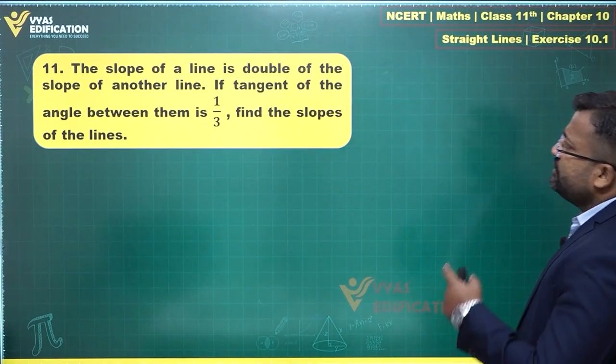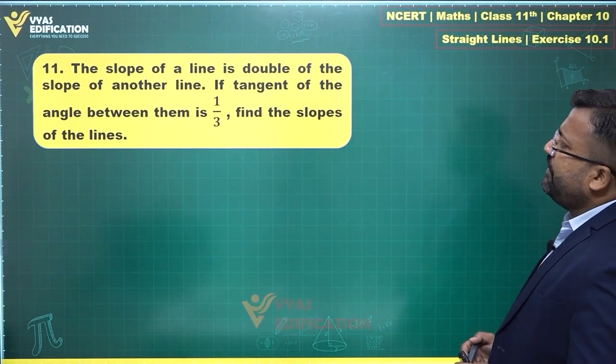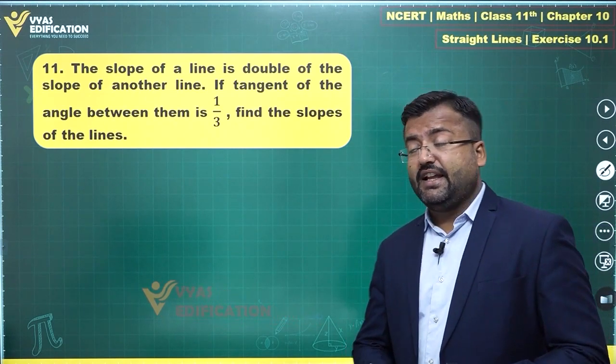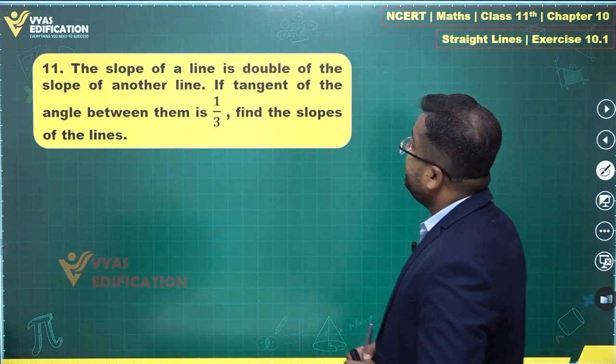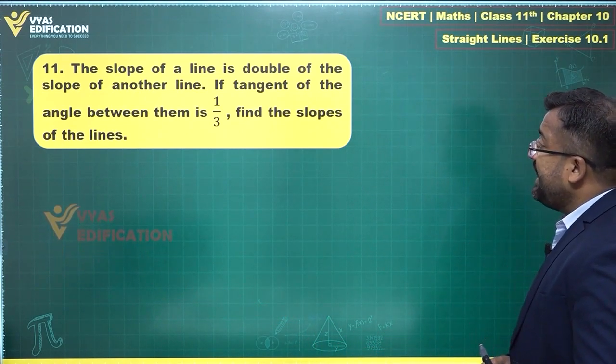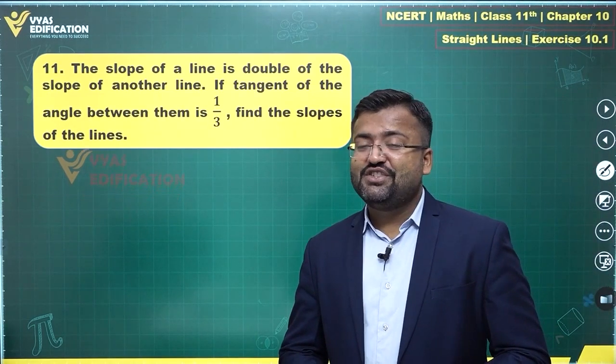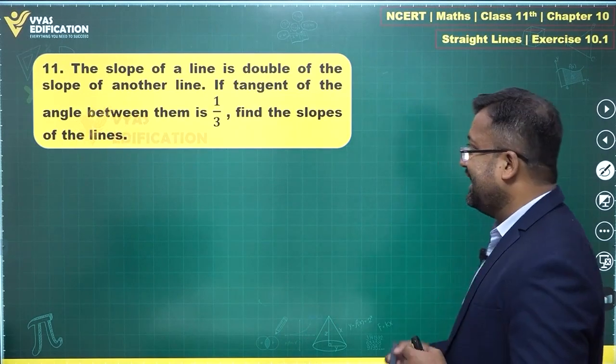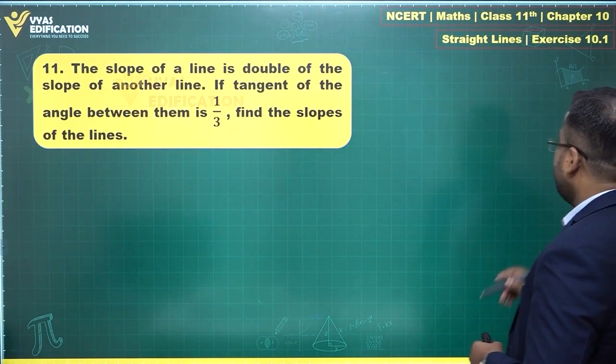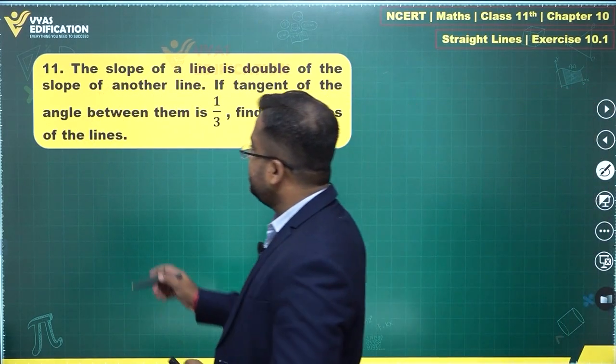The eleventh question says that the slope of a line is double the slope of another line. If tangent of the angle between them is 1 by 3, find the slopes of the lines. Pretty interesting. A concept which we have just discussed has come back again in front of us.